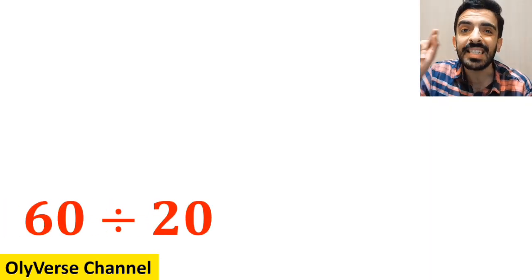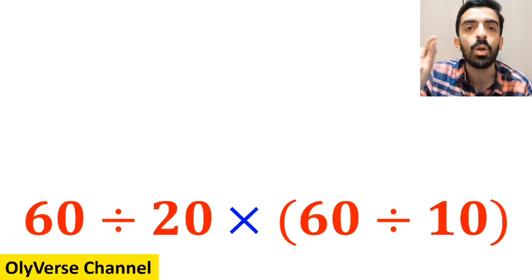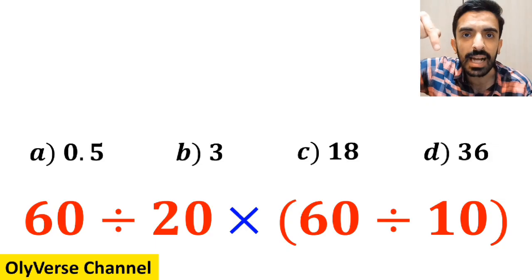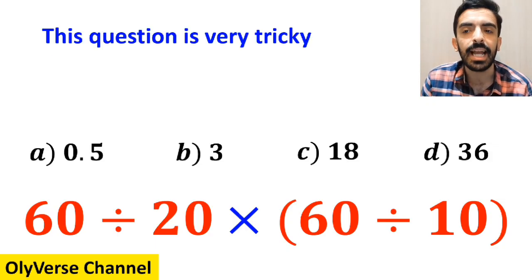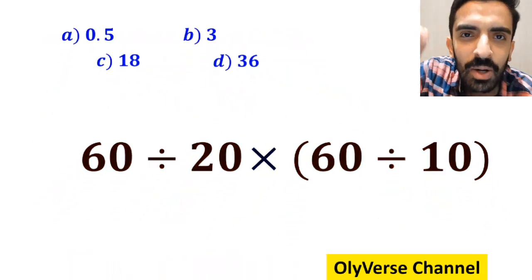What is the value of the expression 60 divided by 20 times open parenthesis 60 divided by 10 closed parenthesis? Which option do you think is the correct answer to this question? This expression is very tricky and has caused many people to pick the wrong option. Let's go step by step and solve it together.